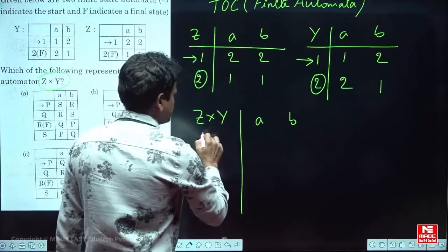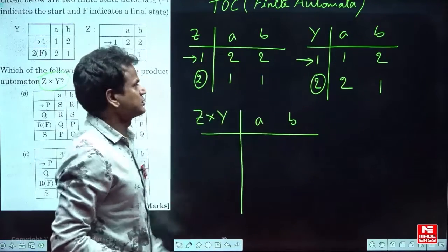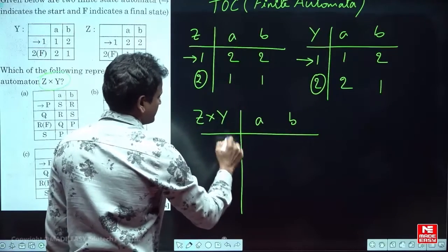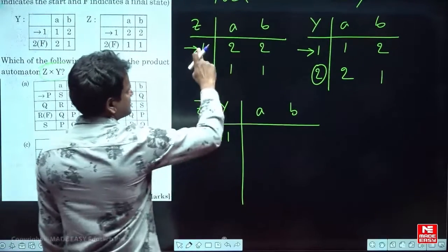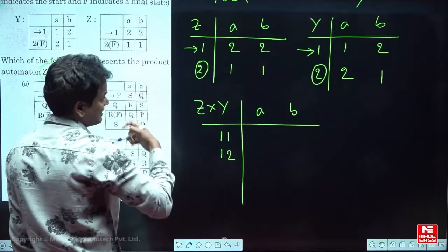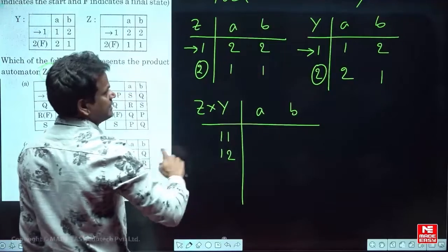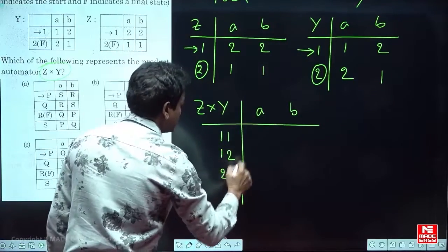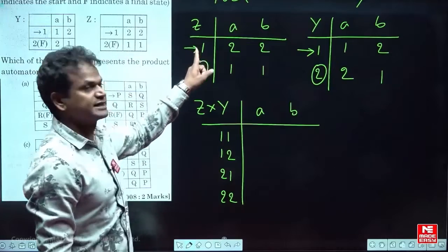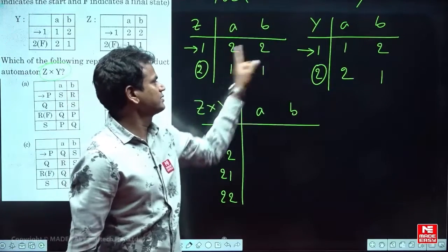Now, what is Z cross Y? We take the states of Z crossed with the states of Y. So the combined states are: 1,1 then 1,2 then 2,1 and 2,2. These four states form the cross product Z cross Y.